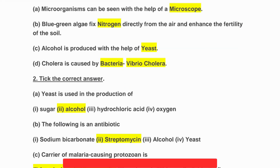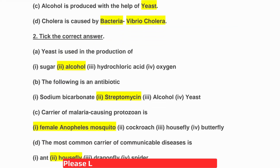Question two: tick the correct answer. A: Yeast is used in the production of — first sugar, second alcohol, third hydrochloric acid, or fourth oxygen. The correct answer is second: alcohol.